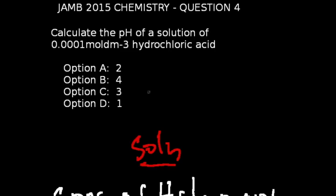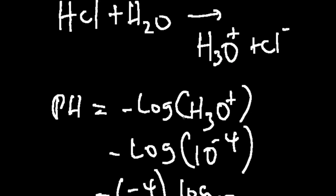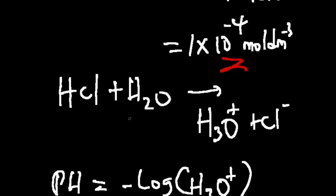Question from chemistry exams: Calculate the pH of a solution of 0.001 mol per dm³ hydrochloric acid. The correct answer is option B, which is 4. The concentration of hydrochloric acid given is 0.001 mol per dm³. Converting that to standard form gives 1 × 10⁻⁴. The ionization of hydrochloric acid is: HCl + H₂O → H₃O⁺ + Cl⁻.